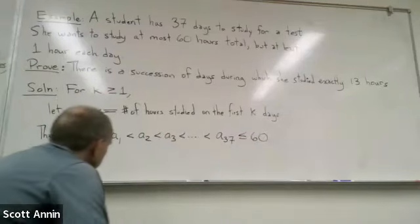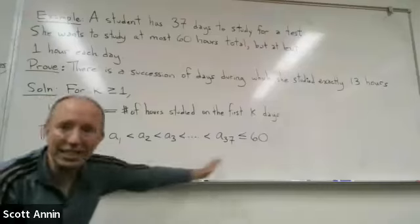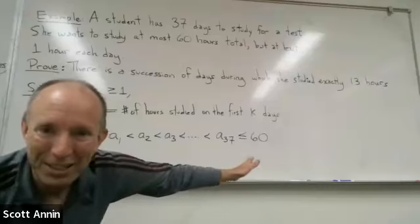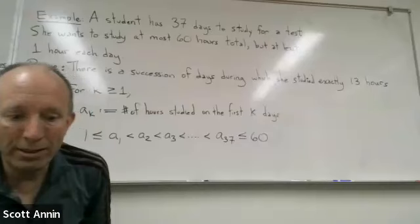So we've got these 37 distinct integers. But of course, they land somewhere between one and 60.